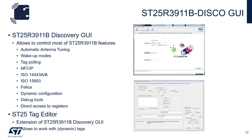The Discovery Board also comes with a GUI that allows you to control virtually all of the features of the 3911B. This includes automatic antenna tuning, wake-up modes, tag polling, NFC IP (active peer-to-peer), 14443A and B, 15693, and Felica. It gives you the option to dynamically configure the device, includes debug tools and direct access to registers via the register map. It also includes the ST25 tag editor, which you can use to work with ST's dynamic tags.